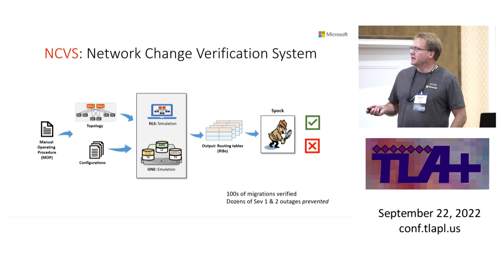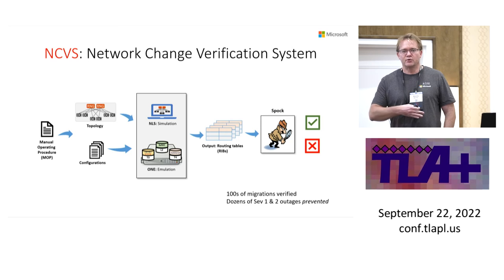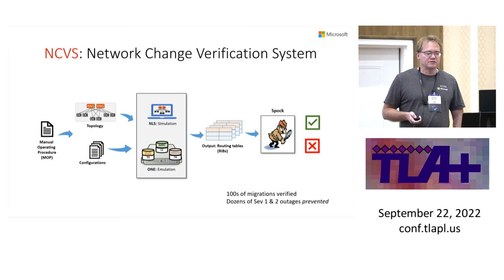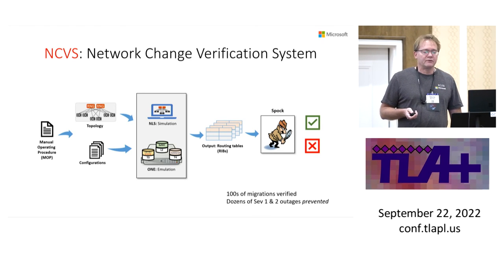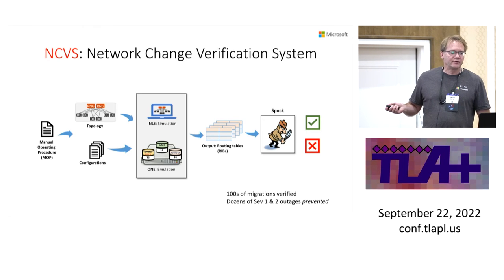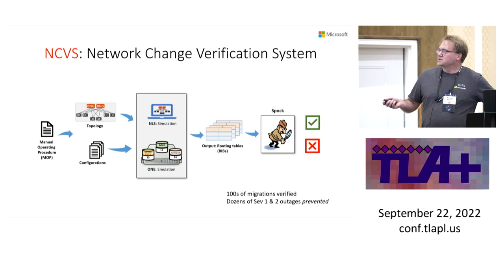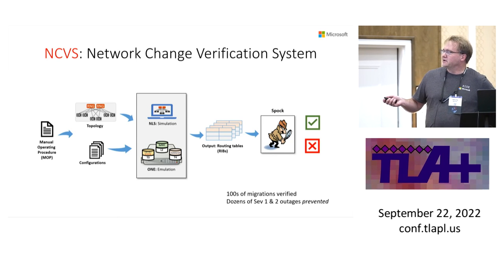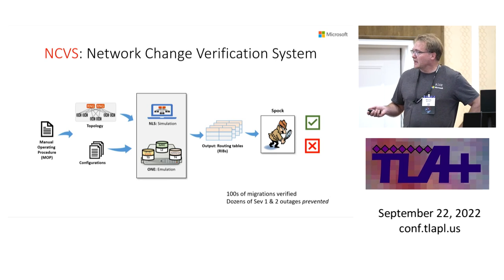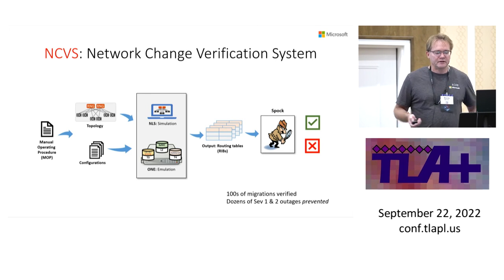These tools come together in a network change verification system — NCVS — that is run prior to deploying large changes in networks. It's been used on hundreds of migrations since deployment. A migration has configurations specifying what the network is and what the policy is; it runs through simulation and emulation tools that produce a data plane, which is then checked using Spark, SIN, and Z3 verification. It has prevented dozens of outages so far.